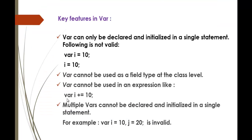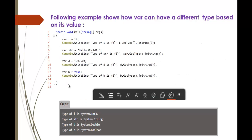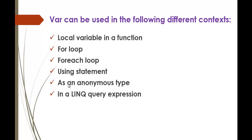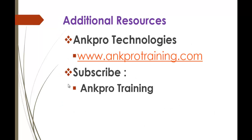In this session we learned what var is — the implicitly typed local variable — introduced in C-Sharp version 3.0. We learned the difference between implicitly and explicitly typed, how the compiler determines what type of value a variable holds, saw examples, and explored var in different contexts and its key features. Thank you for listening, have a great day, and don't forget to subscribe to the YouTube channel AngProTraining and give your feedback. Thank you.